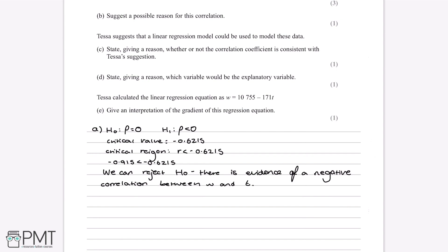This will get us all three marks. The first mark comes from stating the hypotheses clearly — the null hypothesis and alternative hypothesis. The second is a method mark for stating the critical value, minus 0.6215, using the table. The third is an answer mark for saying that because minus 0.915 lies within the critical region, we reject H0 and there is evidence of negative correlation.